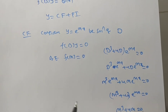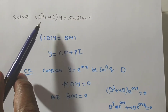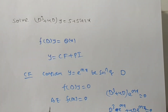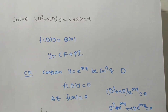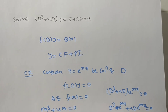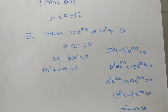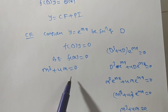Since e^(mx) is never zero, we have m³ + 4m = 0. This is the auxiliary equation — you simply replace D with m. So the auxiliary equation is m³ + 4m = 0.